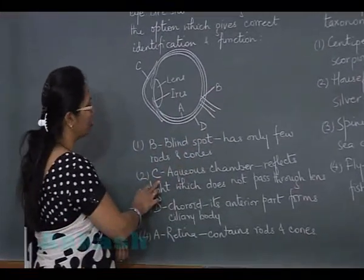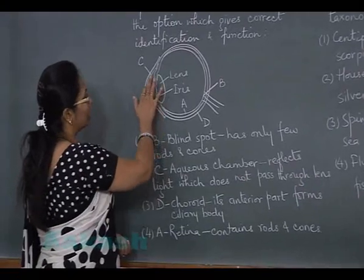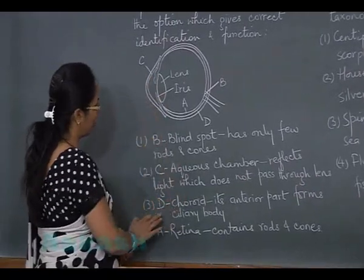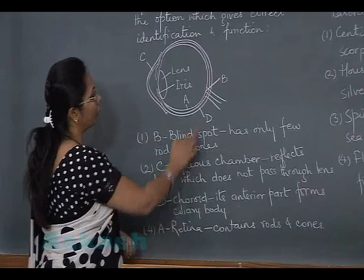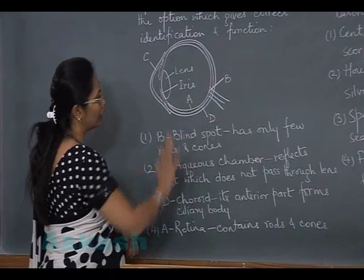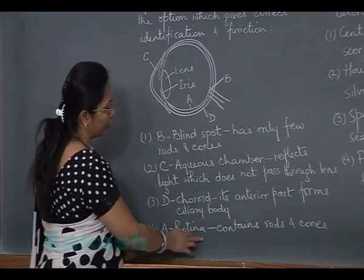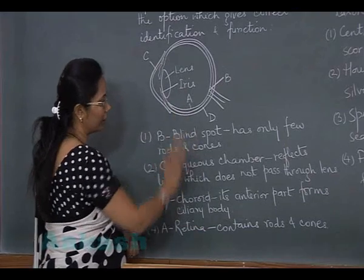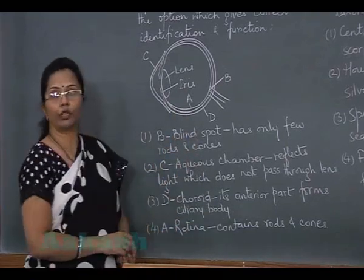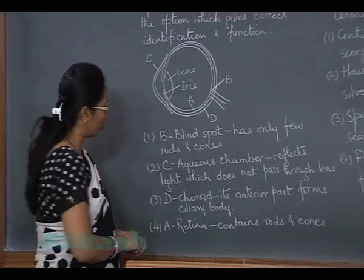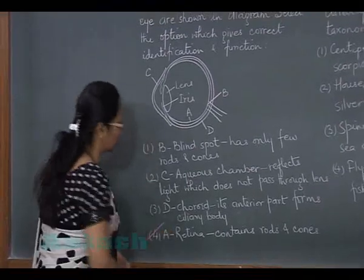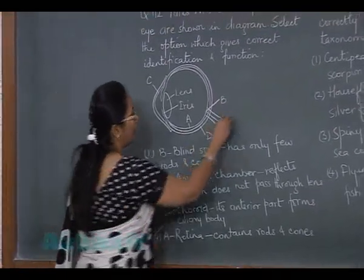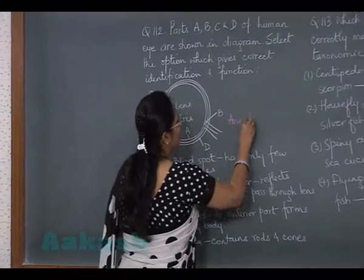D is choroid - D is the outer one, that is sclera. A retina - the inner one, that is retina, and contains the photoreceptor cells, that is rods and cones. So our correct choice is 4, and that's how the answer would be 4.